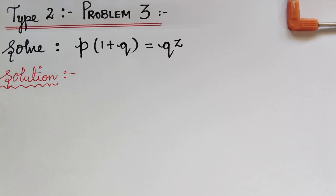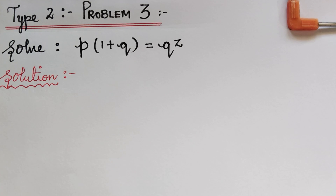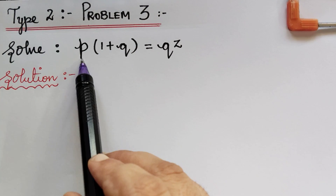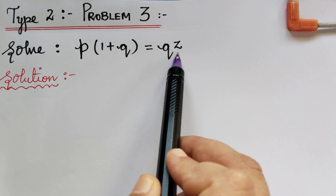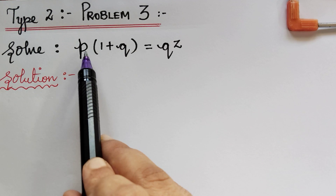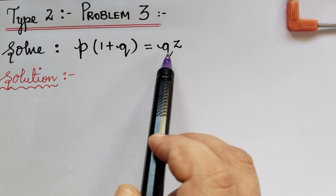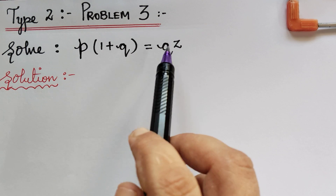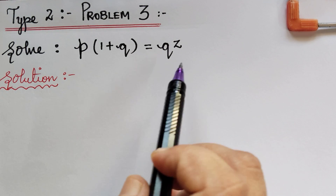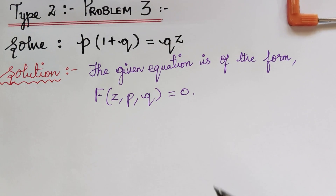Under standard Type 2 nonlinear partial differential equations, we have Problem 3 — we have already completed problems 1 and 2. The given equation has only p, q, and z. If an equation has explicitly p, q, and z only, then it is of the form f(z, p, q) = 0. So first we write it in that form and mark it as equation 1.